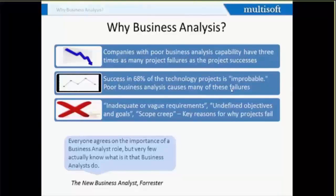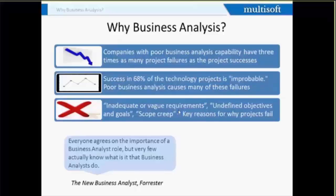The main reasons why projects fail are inadequate requirements, undefined objectives, or scope creep. All these aspects can be controlled if we are performing business analysis — if we are performing proper requirement elicitation, gathering the right requirements from stakeholders, documenting the correct requirements, and communicating the requirements properly to various stakeholders so that everybody understands the scope of the solution.